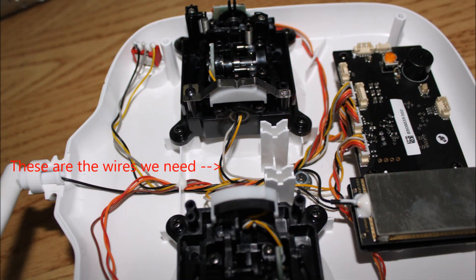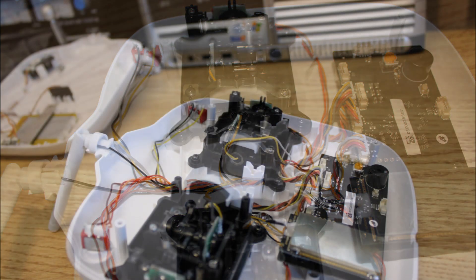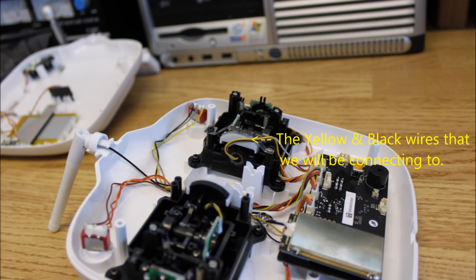These are the wires that we are interested in that go from the joystick to the main circuit board. We will be connecting to the yellow and black wire. We will not touch the grey wire.